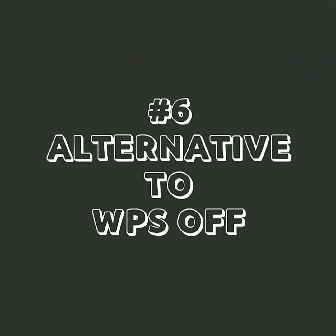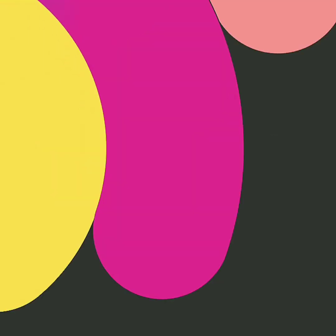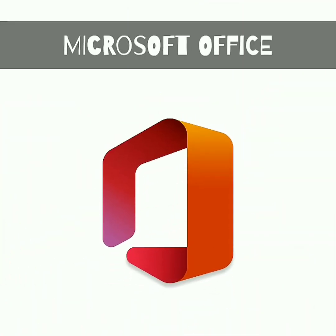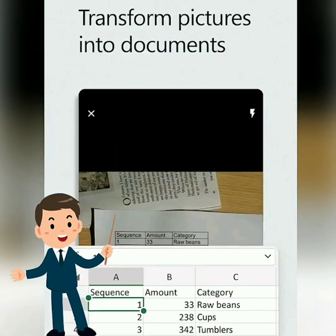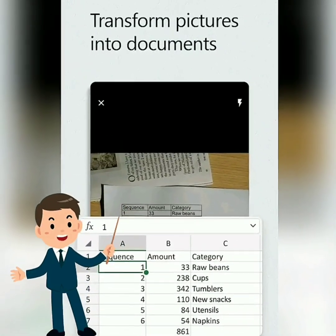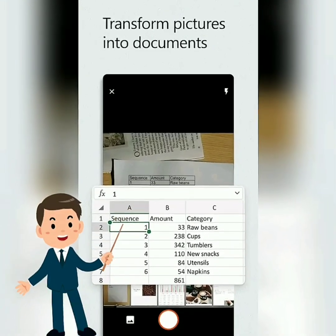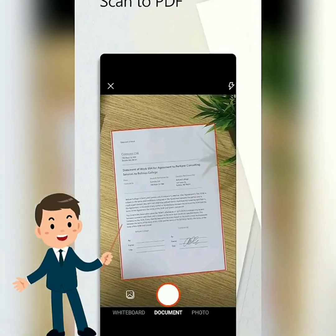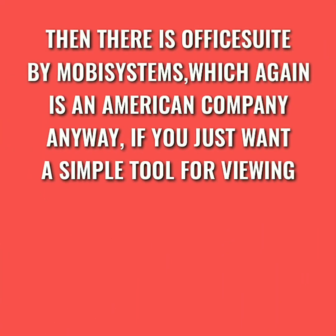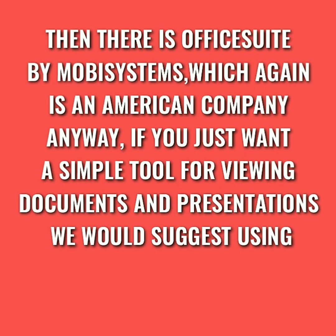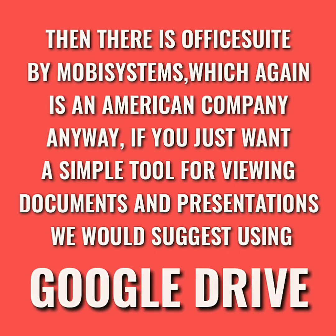Number 6: alternatives to WPS Office. Instead of that, use Microsoft Office, which combines Word, Excel, and PowerPoint alongside useful editing tools and templates. You can also transform documents into pictures, capture notes, and create PDFs. Then there is OfficeSuite by MOBA Systems, which is an American company. Anyway, if you just want a simple tool for viewing documents and presentations, we would suggest using Google Drive.